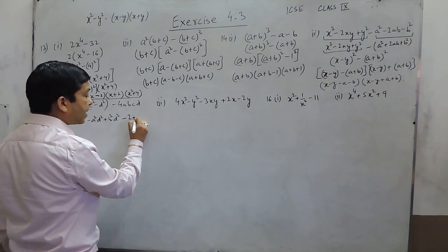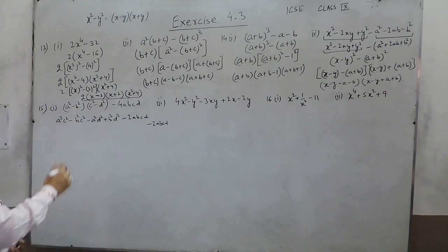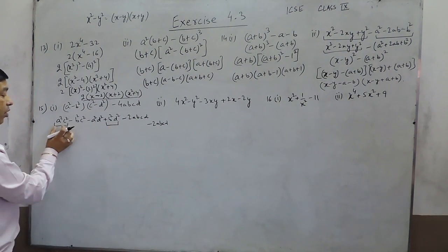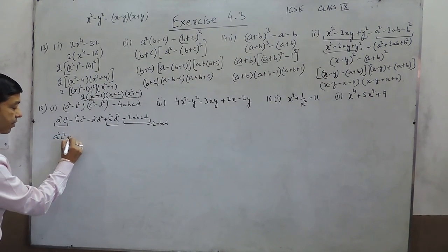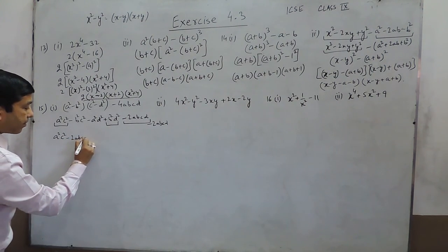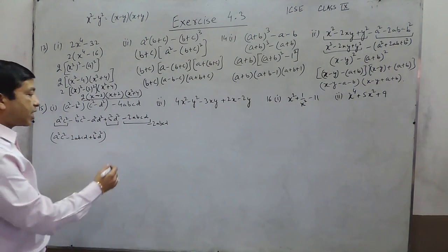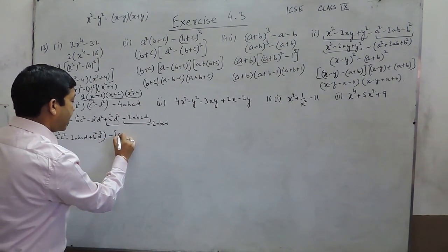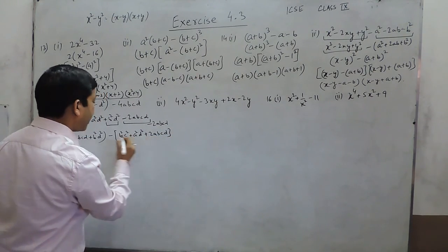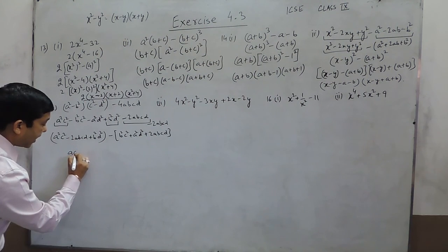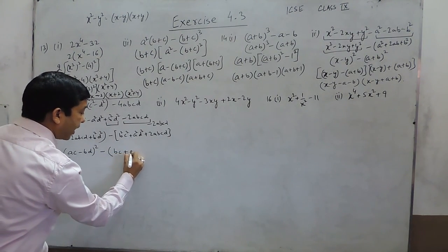It can be written as minus 2abcd and minus 2abcd. We are converting 4 into 2 and 2 because with certain terms, minus 2abcd will become a perfect square. We can write a square c square minus 2abcd plus b square d square for the first three terms as a perfect square. Then minus b square c square plus a square d square minus 2abcd after taking the negative side common. So this is written as ac minus bd whole square minus bc plus ad whole square.